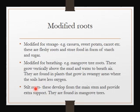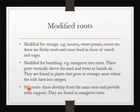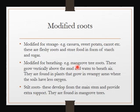Stilt roots — the word 'stilt' means support. Just as a farmer places a long stick to support a banana plant bearing a heavy bunch so it won't fall, we have roots which act as stilts. These develop from the main stem and provide extra support. They are found in mangrove trees.